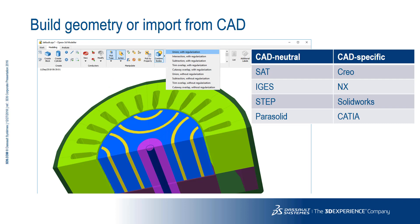Opera's Modeler contains the ACIS solid modelling kernel from Dassault Systèmes, which can be used to generate complex parametric models. Alternatively, it can read and write in many different formats of CAD file, both neutral formats and CAD-specific. These include SAT, Parasolid, CATIA and SOLIDWORKS.